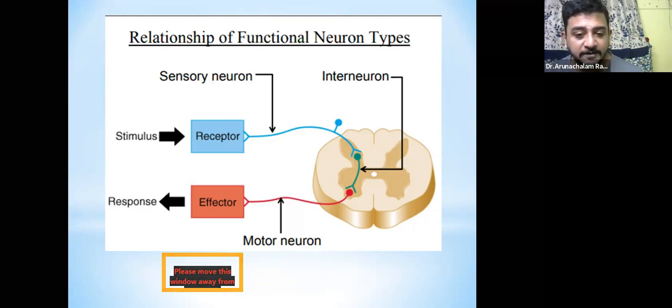Either the central nervous system will give a response or it will not. Both are considered to be the nervous system's response to sensory input. It is detecting whenever needed and gives a response. Otherwise, it remains silent. Both are considered responses.